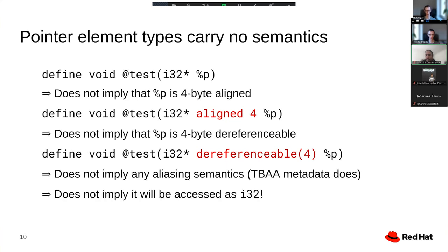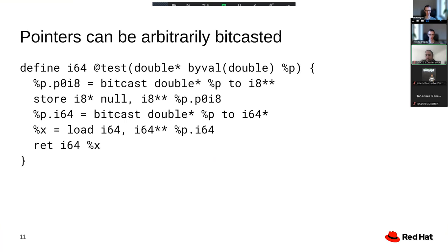Most generally, it does not imply that we are going to access this pointer using an i32 type. The reason why we don't get any guarantees is essentially that pointers can be arbitrarily bit casted. So here is a more complex example.